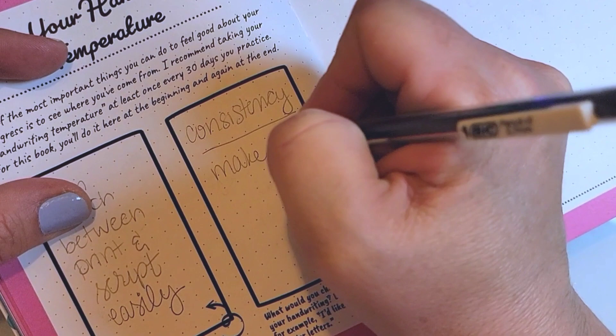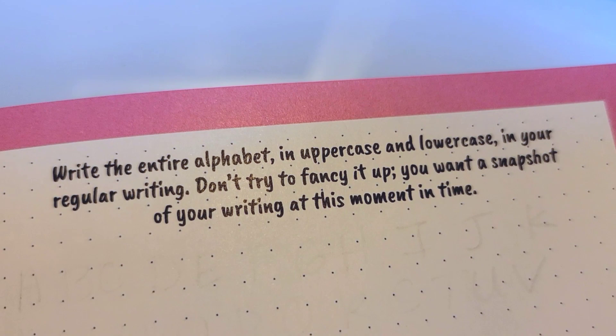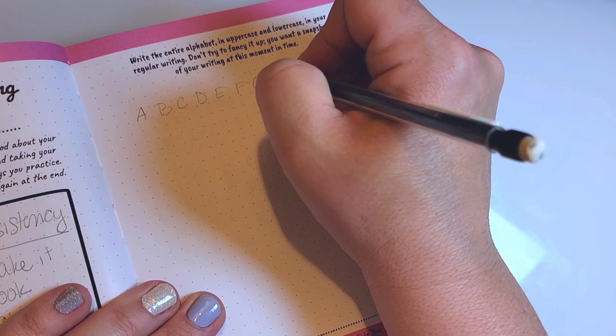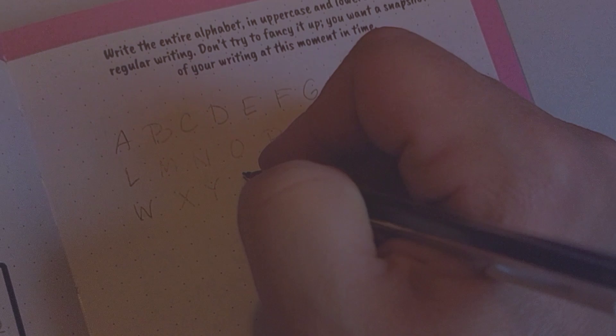The specific thing you want to improve on I think is to give yourself a goalpost, something to practice on improving every time you're doing writing. The next step is going to be to write the entire alphabet both in uppercase and lowercase in your regular writing. So don't try and make it fancy. This would be like you're scribbling a note out to one of your kids or writing the grocery list. Don't overthink it. Just write in your normal writing.